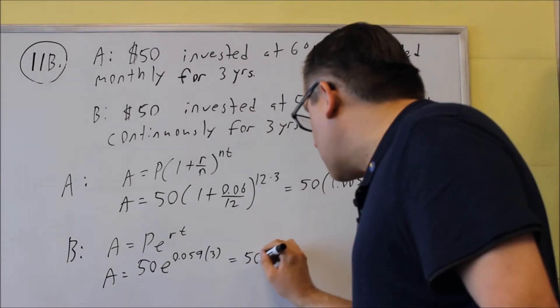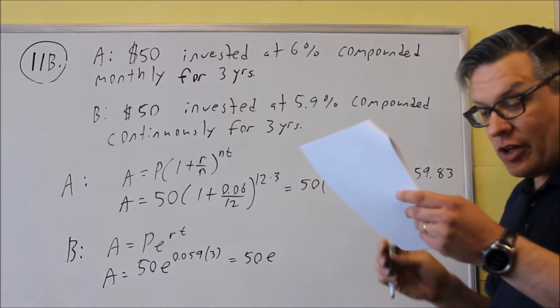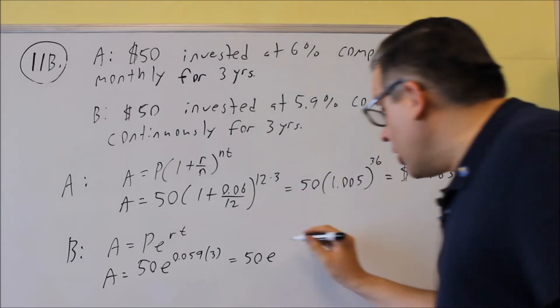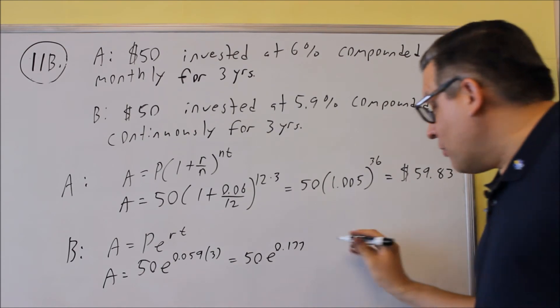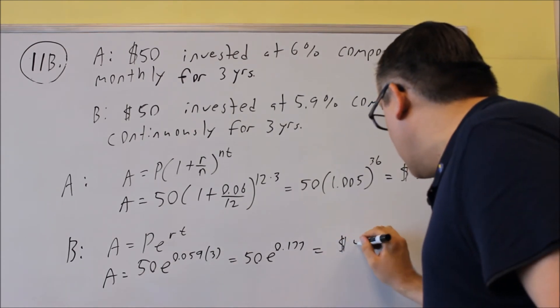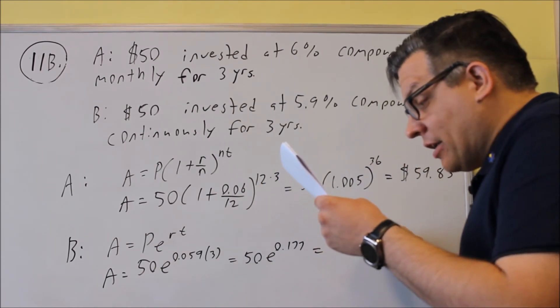We're going to do the exponent part, 0.059 times 3, and we get 0.177. And if you put that into your calculator, you get $59.68.